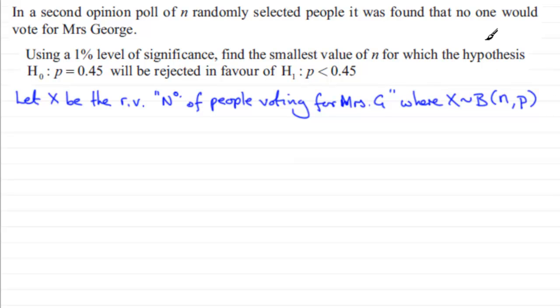Now to do this test, we know that no one would vote for Mrs George. So we've got an observed value X equals 0, zero people voted for Mrs George. And we're testing this at the 1% level of significance. Alpha equals 1%, or as a decimal, that's 0.01. If you've been watching videos in my series on significance testing, you'll know that what I tend to do is look at a rejection region.